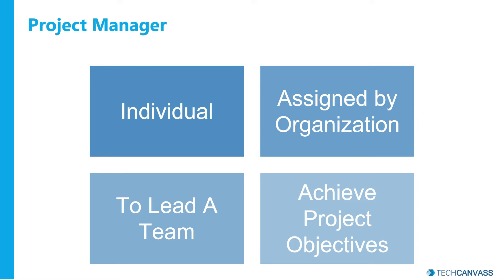She achieves these objectives by leading and managing teams, planning, executing, monitoring, and controlling the project. Now to achieve this objective, she needs to carry some specific skills. I'll categorize the skills into two different types: the first one is Power Skills or Soft Skills, and the second one is Technical Skills.